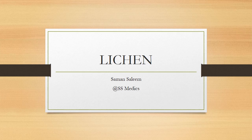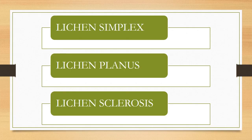Today we will talk about lichen. There are three main types of lichen that mostly come up on our exams: lichen simplex, lichen planus, and lichen sclerosis. These names are pretty confusing, so we will talk about each one of these.